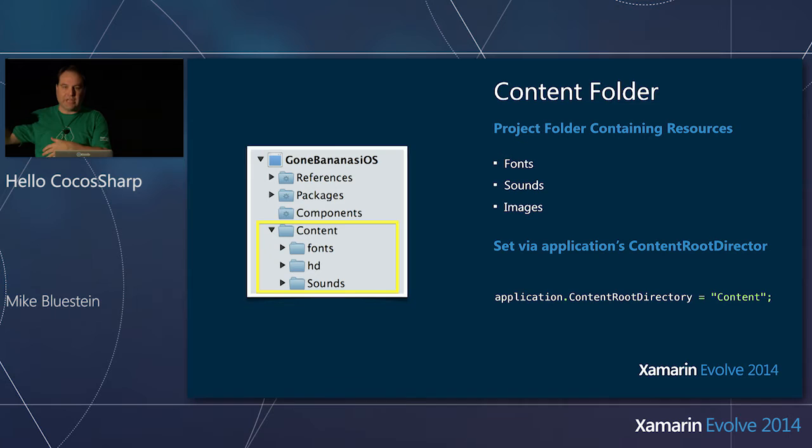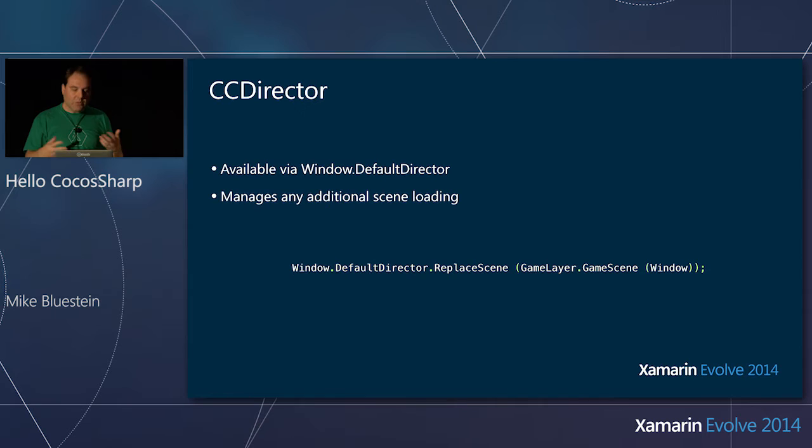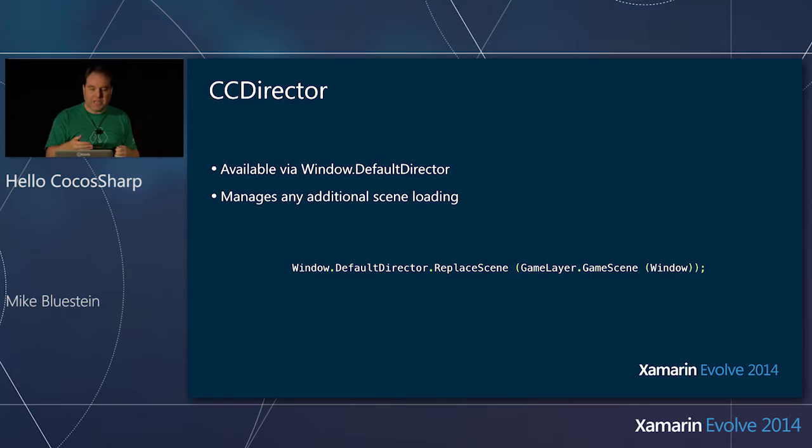You have this bootstrapping code to get the application going, you set up an application delegate to handle callbacks and initialization, and then you want to get something on the screen. That's what the class called the Director does — the Director manages loading scenes. Think of it like a movie metaphor: you have a director, and the director starts a scene and moves to another scene.